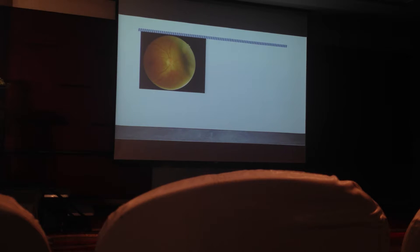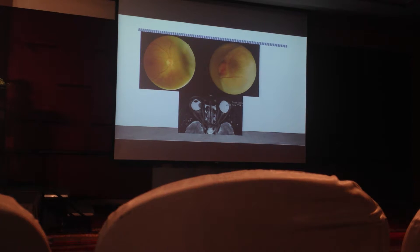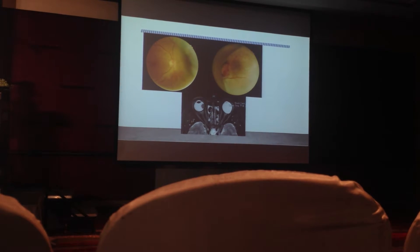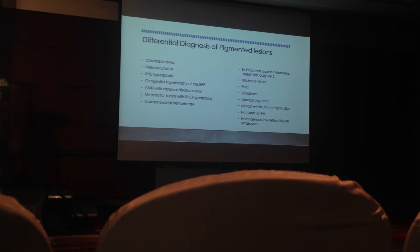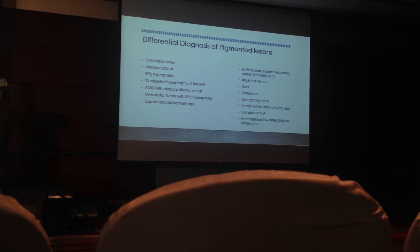This is an anteriorly located uveal melanoma. You can see it is quite a large tumor, and sometimes we need other examinations such as MRI or CT scan to see the extent of the tumor. As you can see, the ciliary body is not involved in this case. I would also like to mention differential diagnoses of pigmented lesions — the most important ones are AMD and metastatic tumor when you see lightly pigmented lesions.